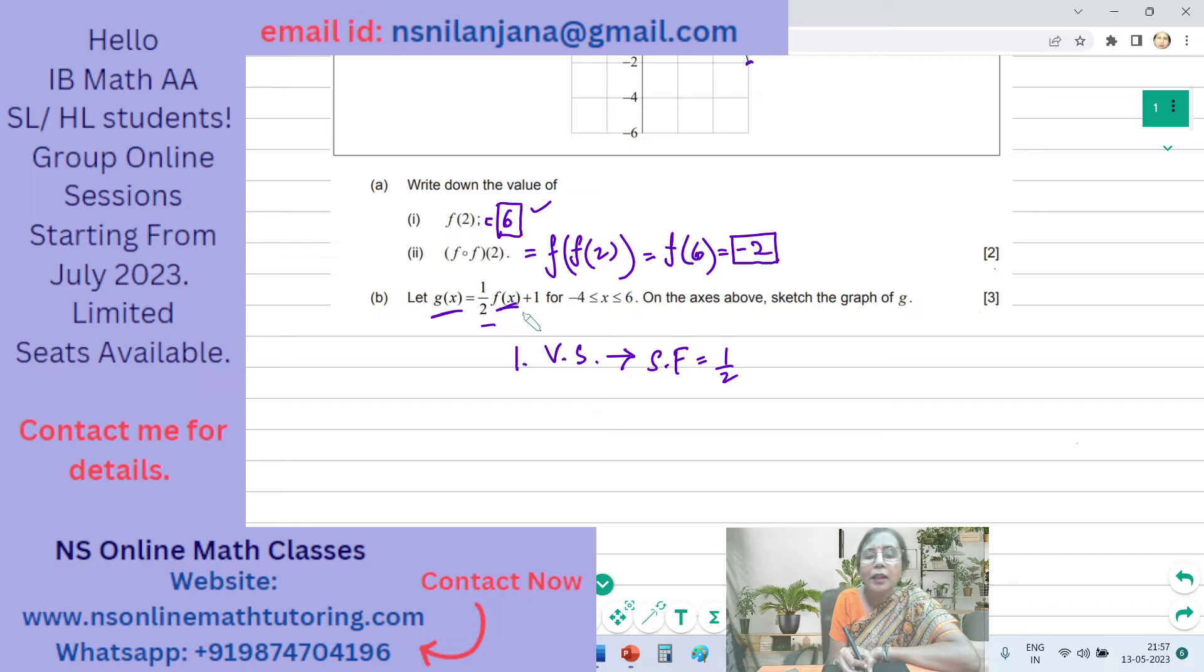That means every point on the graph of F of X, the Y coordinates of every point on the graph of F of X will get multiplied with the number half. But the X coordinates will be remaining unchanged.